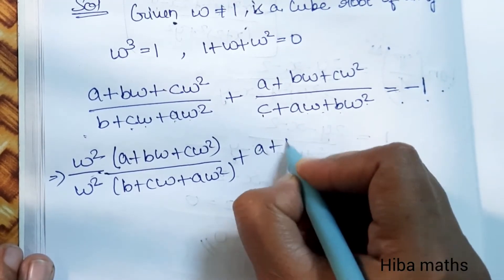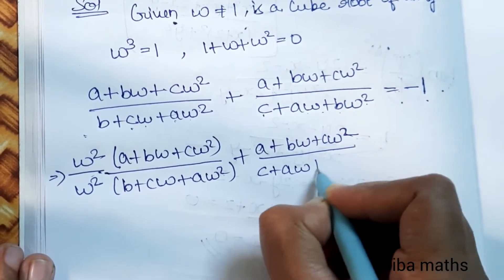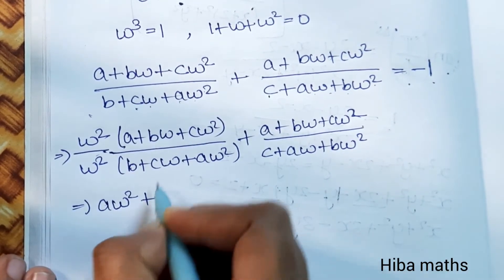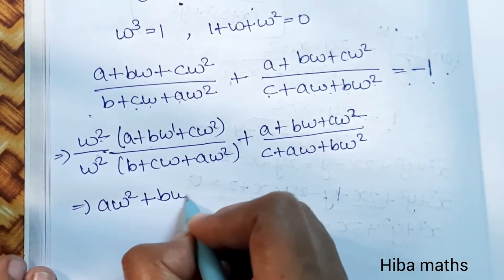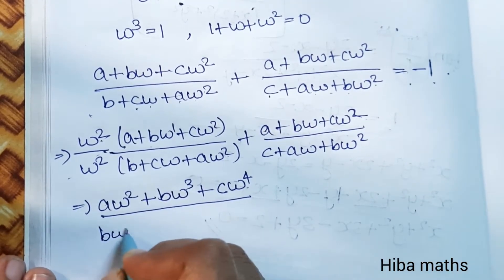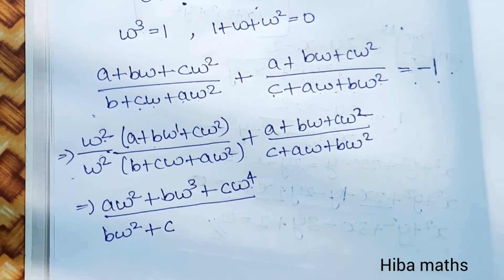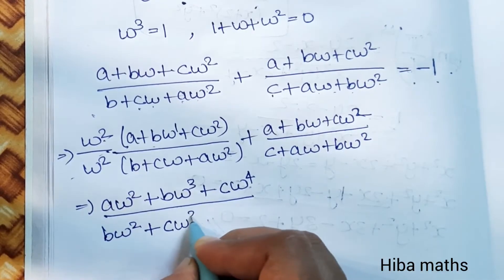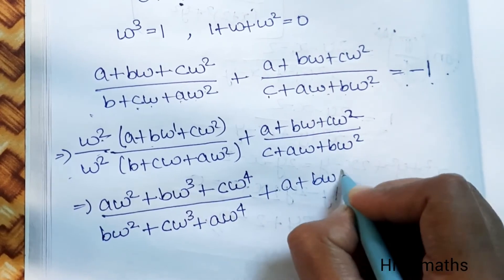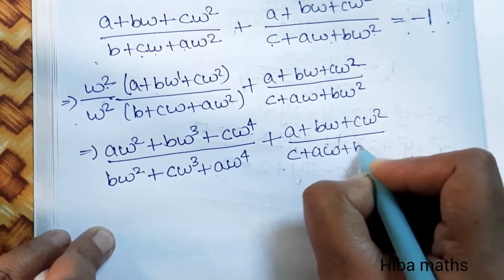In the same way, C·omega squared divided by (C plus A·omega plus B·omega²). If you multiply inside, you get A·omega squared plus B·omega cubed plus C·omega to the 4th. Remember: B·omega squared plus C, and omega cubed plus A·omega to the 4th, plus (A plus B·omega plus C·omega²) divided by (C plus A·omega plus B·omega²).